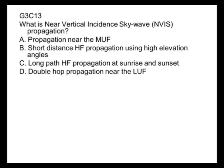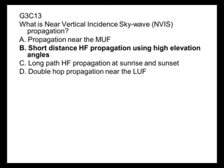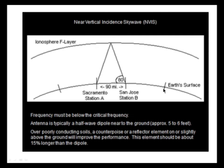What is near vertical incidence sky wave propagation? It's short distance propagation using high elevation angles. This is important out here in the islands for high frequency communications, because if we were using ordinary sky wave, we'd skip over a lot of places. But with near vertical incidence sky wave, I can communicate easily between the Big Island and Oahu, or up to Kauai, or to Maui in between. Because I launch at a high angle and it comes back down at a sharp angle — that's near vertical incidence sky wave.